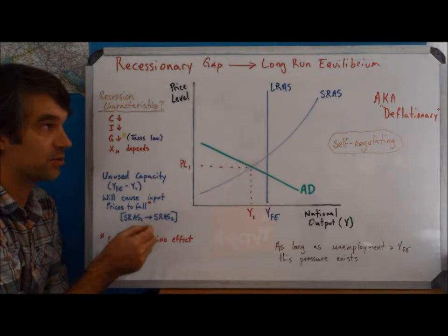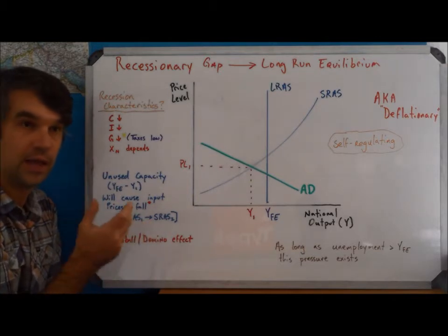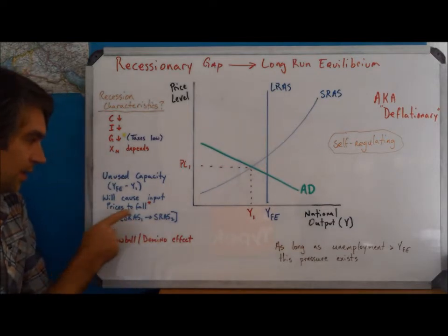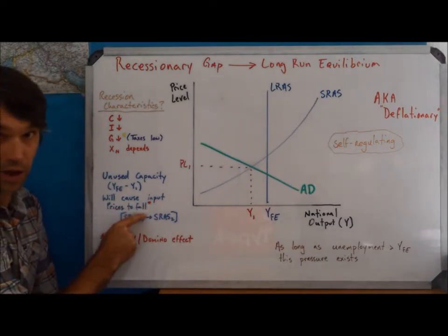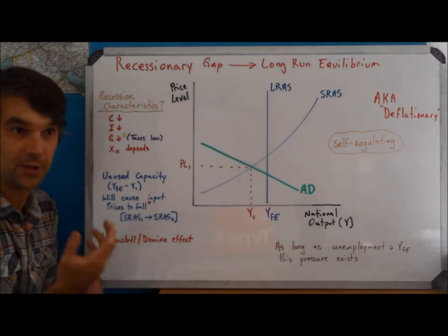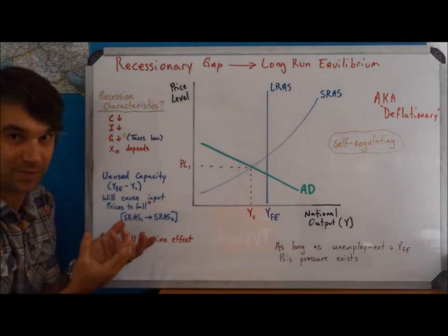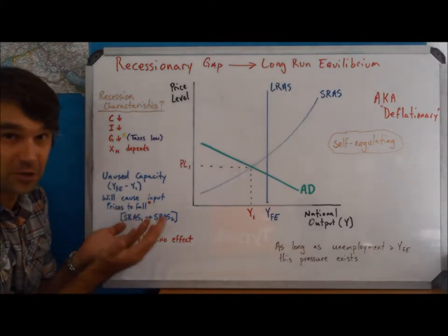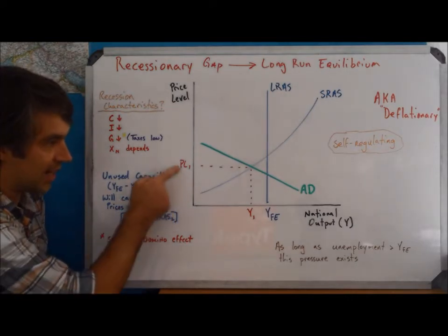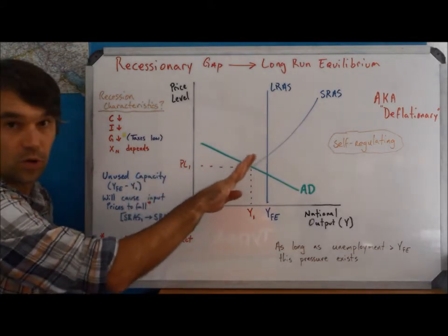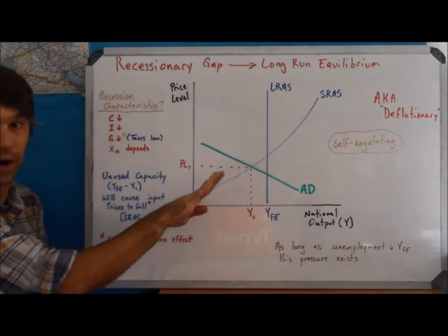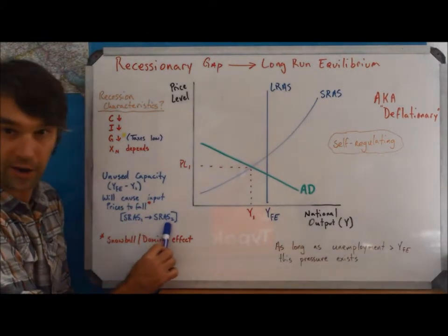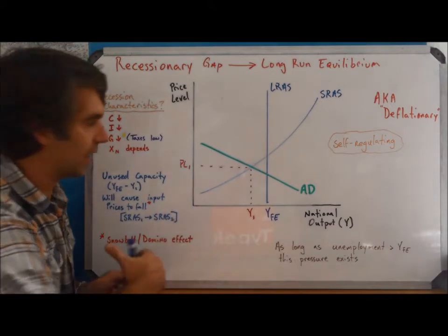Remember in the short-run, the difference between short-run and long-run is in the short-run, input prices are fixed. Well, if input prices begin to fall, remember the major input price is wage. So the second I'm willing to accept a lower wage, input prices have fallen. The second that happens, we have a new short-run, and that means that at each price level, we're able to produce more than we previously were. That means we get short-run aggregate supply shifting from one to short-run aggregate supply two, something like this.